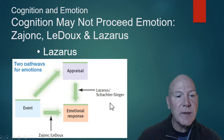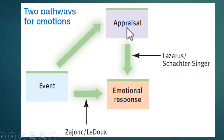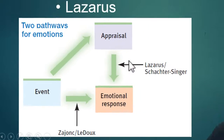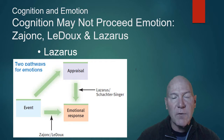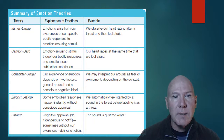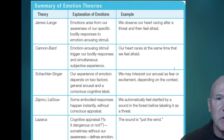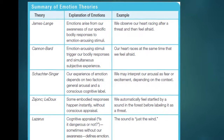Lazarus and Schachter-Singer say that we have an event, an appraisal, and then an emotional response. Zajonc and LeDoux say there's an event and then directly an emotional response — this is like the low road versus the high road. Make sure you know those theories; they can be confusing but we'll clear them up in class if you have questions. They're always asked about on the AP exam. Here's a chart explaining all the different theories: James-Lange, Cannon-Bard, Schachter-Singer, Zajonc-LeDoux, and Lazarus with his cognitive appraisal.